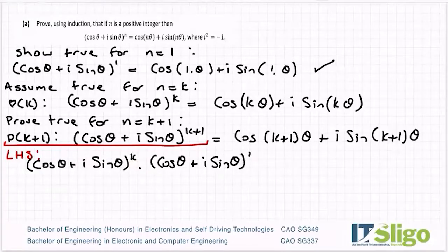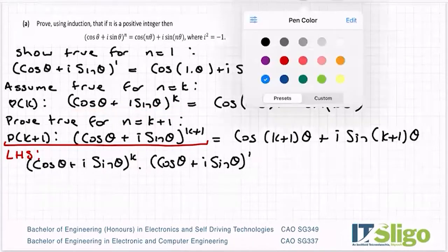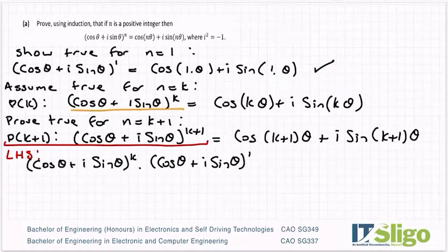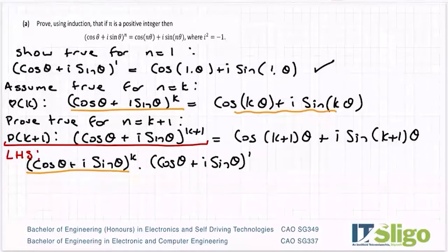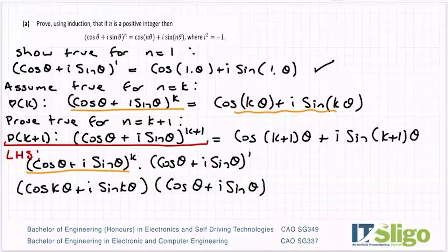What does this allow me to do? Well, it allows me to substitute in from n = k. Can you see? This looks like this. So I'm going to replace it with this side here. I'm going to replace that with (cos(kθ) + i sin(kθ)) · (cos θ + i sin θ), and of course I should have other brackets around the double angle there.